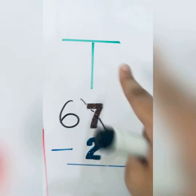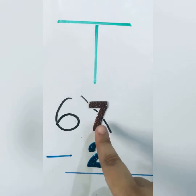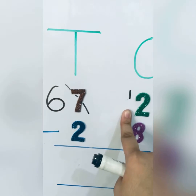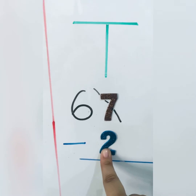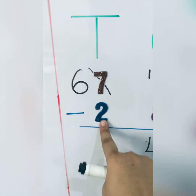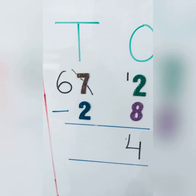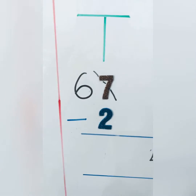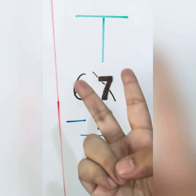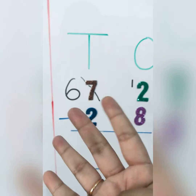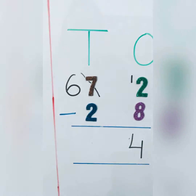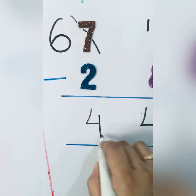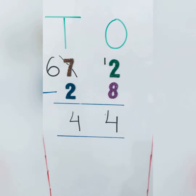Now let's solve the tens column. I had seven but I borrowed one from the seven, so I'm left with six. From six I have to minus two. The smaller number is two, so we start counting from the smaller number till the bigger number. After two comes three, four, five, six. Again we are getting a four. So the answer we are getting is 44.